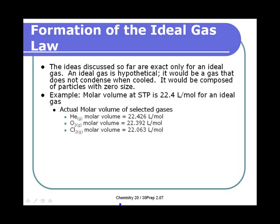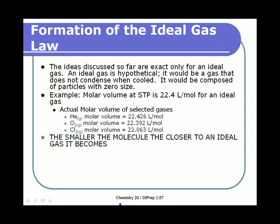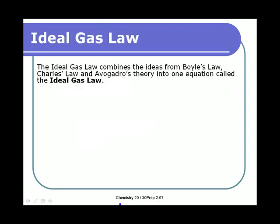Looking at molar volume, for an ideal gas the molar volume is 22.4 liters per mole — the amount of space that one mole of an ideal gas would take up. When you actually measure how much space gases like helium, oxygen, and chlorine take up at STP, they're very close to 22.4. The smaller the gas particles are, the closer to 22.4 the molar volume gets. So real gases behave very closely to ideal gas behavior, and we'll treat them as ideal gases in this course.